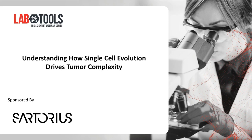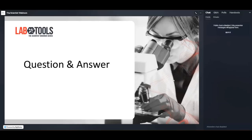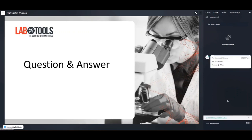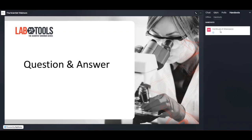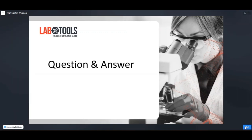We like our webinars to be interactive. We encourage you to send us your questions or comments at any point, and our speakers will address these during the Q&A session following the presentations. To ask a question, simply click on the Q&A tab and type your query into the question box located on the right side of your screen. If you have minimized the Q&A panel, simply click on the blue chat button in the bottom right corner to bring it back.